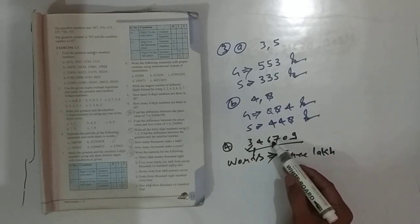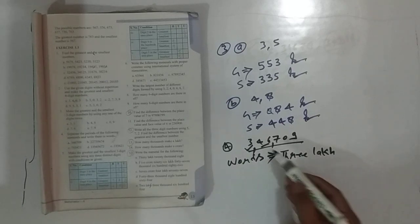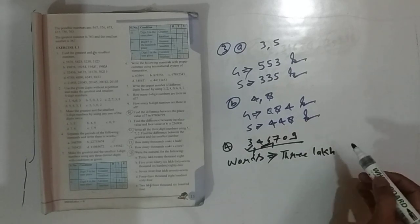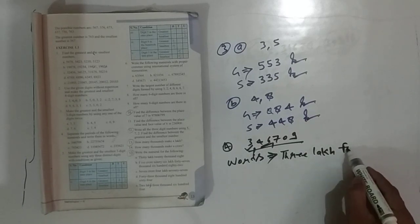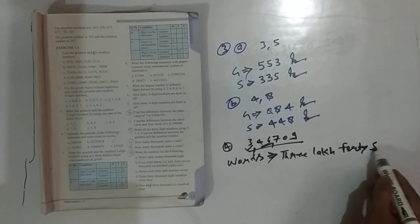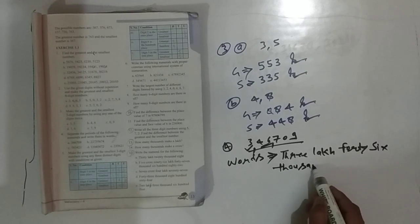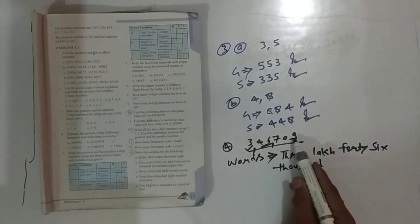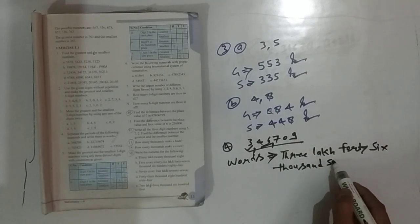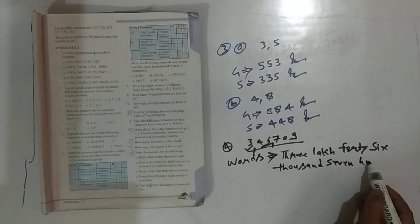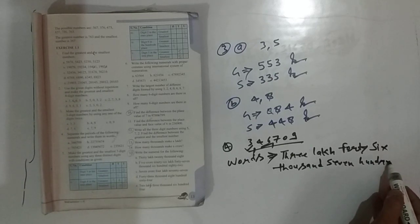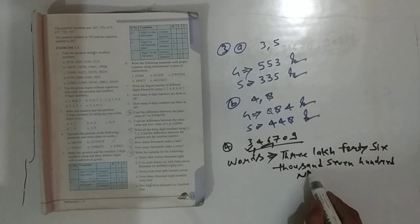According to the Indian system, in ten thousand we take two digits. So we read 46,000, and then in the hundreds place 709. That is the answer: three lakh forty-six thousand seven hundred nine.